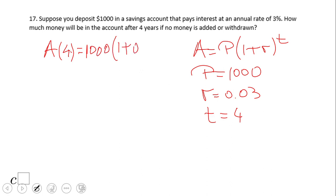A of four will be what? One thousand times one plus 0.03 to the power of four. So let's do a simplification here, which is the parenthesis, and then we're gonna need a calculator. So 1.03 raised to the fourth power.